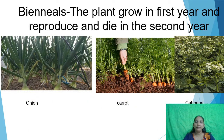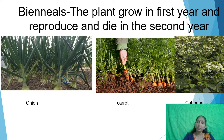The next type is biennials. Biennial plants grow in the first year and reproduce and die in the second year.